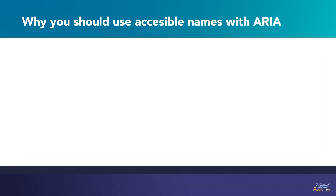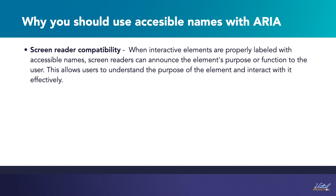Here are three examples of why you should use accessible names with ARIA. The first is screen reader compatibility. Screen readers are commonly used by individuals with visual impairments to navigate and interact with web content. When interactive elements are properly labeled with accessible names, screen readers can announce the element's purpose or function to the user, allowing users to understand and interact with it effectively. For example, a button that triggers a search function can be given an accessible name like 'search' or 'search button' using ARIA, ensuring screen reader users understand its purpose.